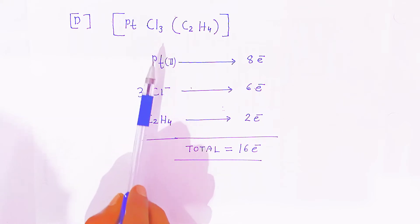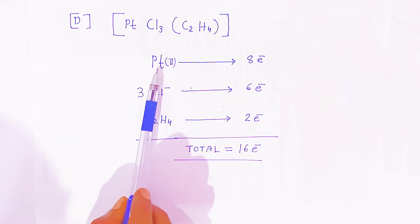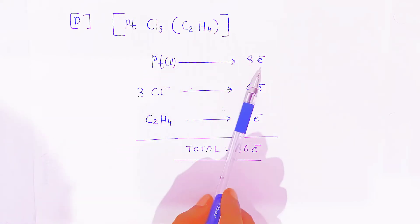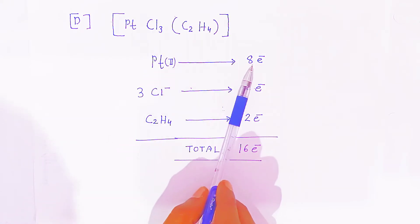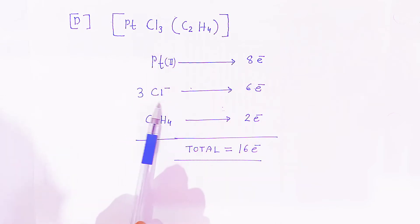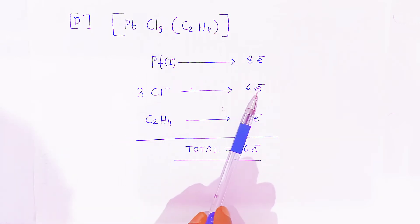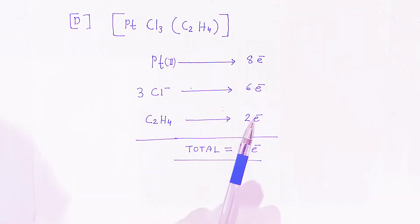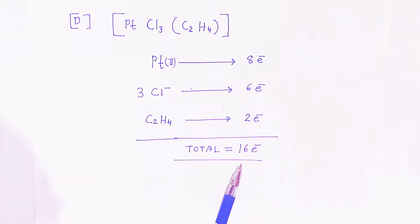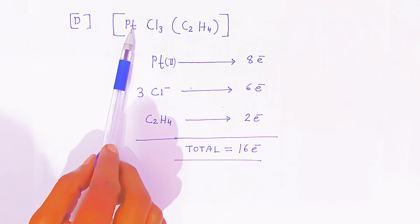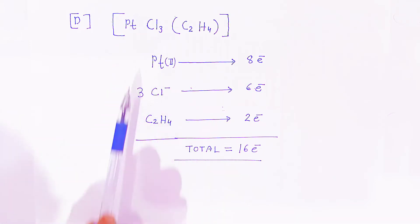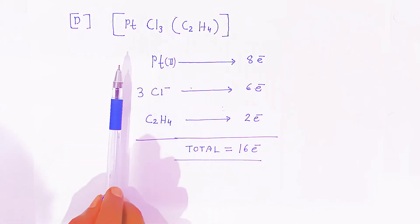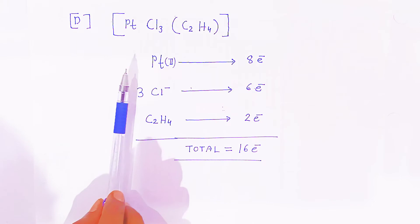For the fourth example, in the platinum complex, platinum(2+) has 8 electrons in its outermost orbit. Three chloride ions donate 6 electrons, and ethene donates 2 electrons. Adding the total: 8 + 6 + 2 = 16 electrons. Therefore this complex is very stable, with 16 electrons present around the platinum center.